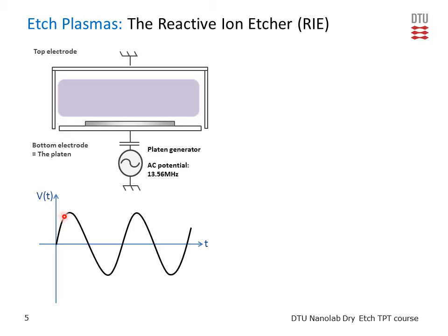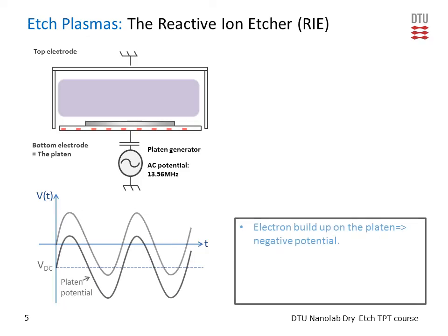When the electrode is positive, it attracts the electrons, and when it's negative, it would in principle attract the ions. But because it's varying so fast, the ions are actually too heavy to follow the movement and they stand still in the plasma, whereas the electrons are light enough to follow the movement and are attracted to the electrode half of the time. There is a blocking capacitor in the system, and because of this, electrons build up on the electrode. After stabilization, the overall potential on the bottom electrode will be negative — only for a very short period will it be positive so electrons can flow. The average potential is negative and is called the DC bias.